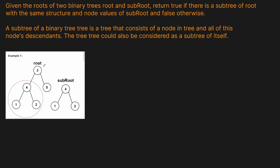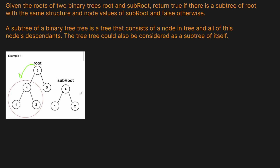Let's look at the example where we're given root as the tree [3, 4, 5, 1, 2] and sub_root as [4, 1, 2]. We can see that this tree is a subtree of the original because the entire tree [4, 1, 2] is contained within it. The subtree was on the left-hand side of our original tree, but it could also be on the right-hand side. If root actually equals sub_root, the trees are considered subtrees of themselves.